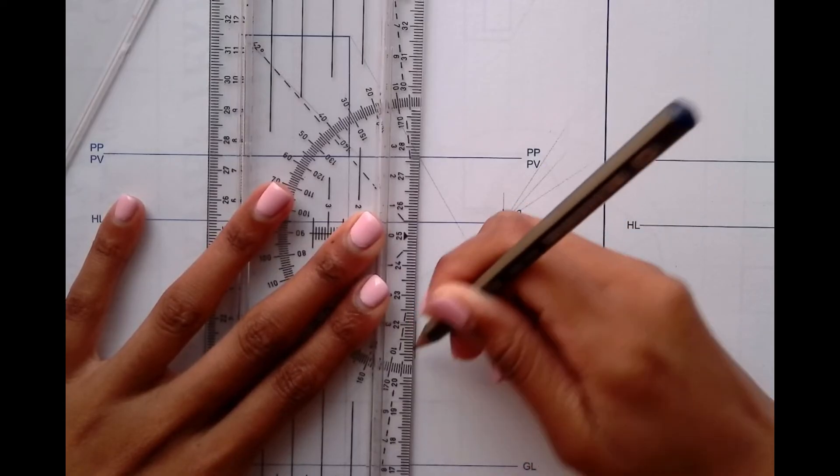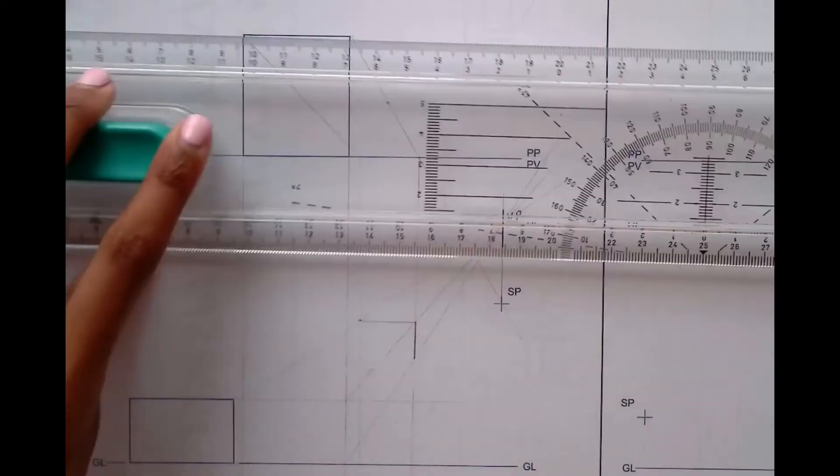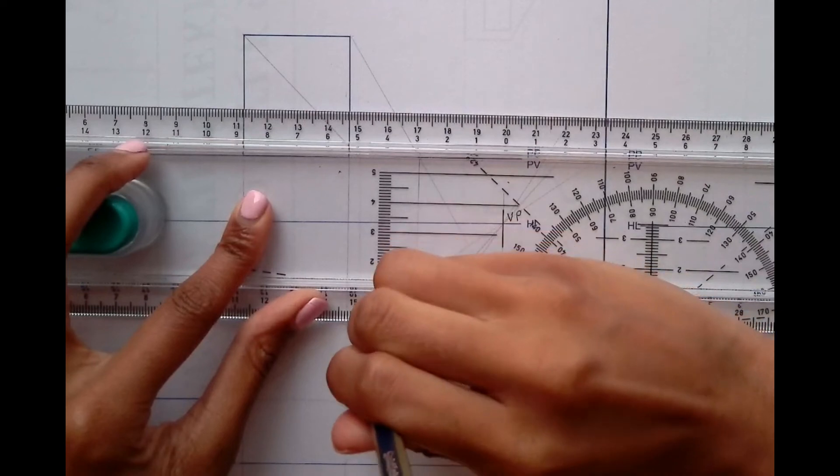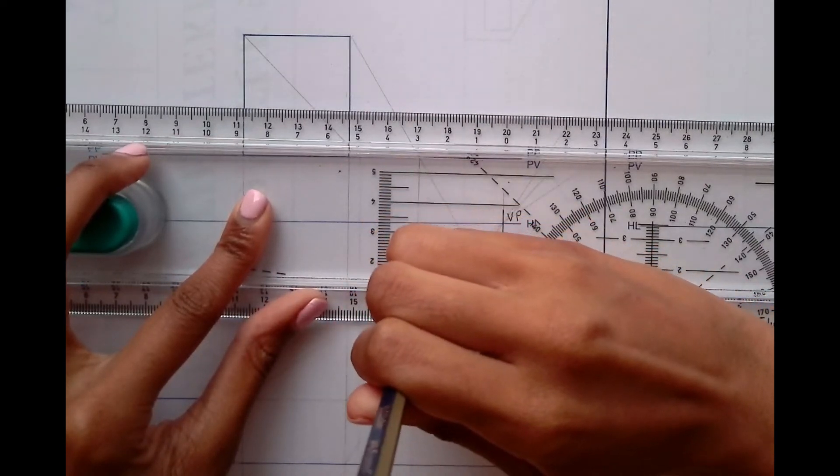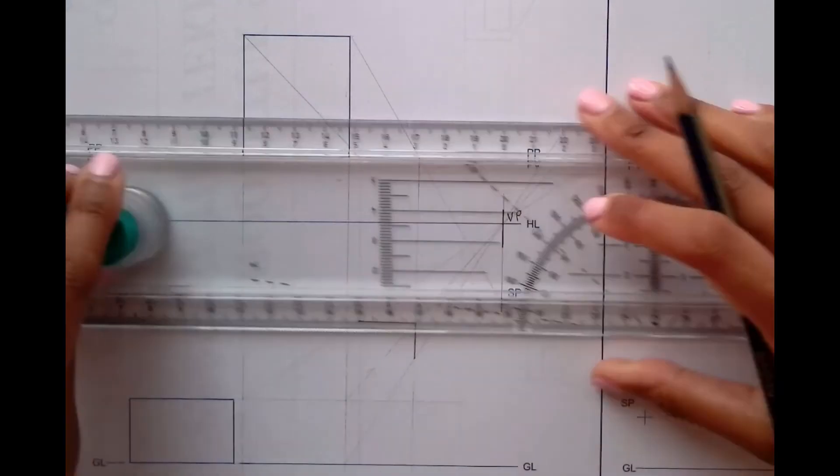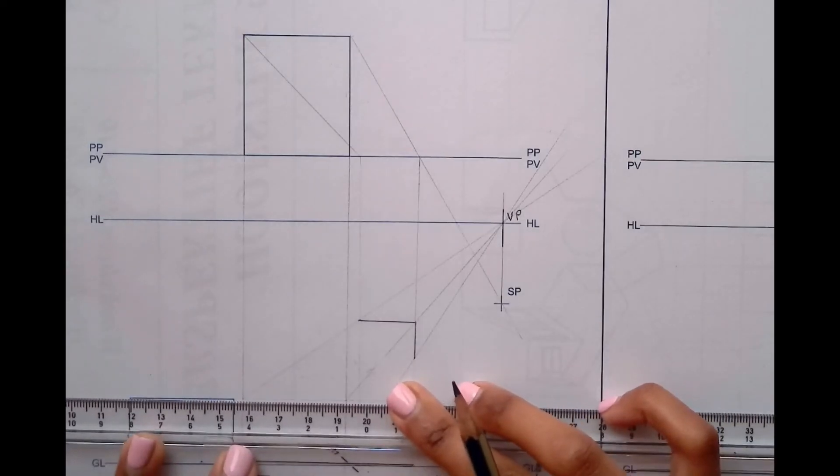You're just going to outline like that, and then this side as well. Make sure it's rolling correctly. Yes, like that. I'm just outlining.